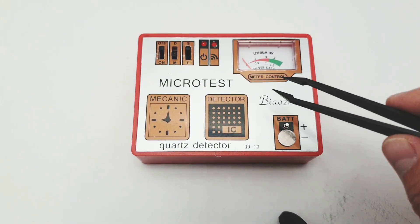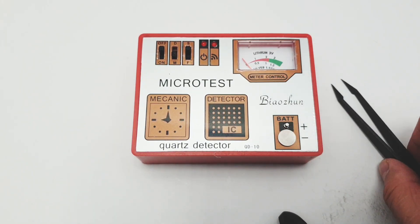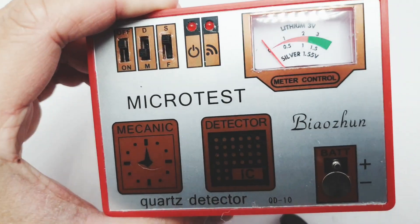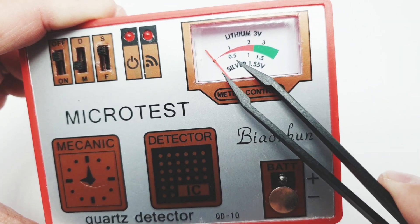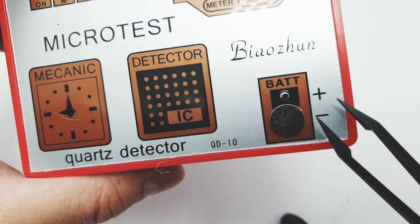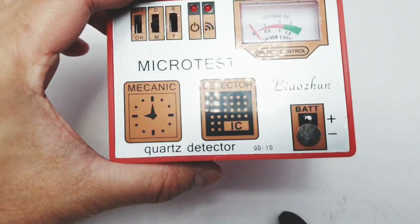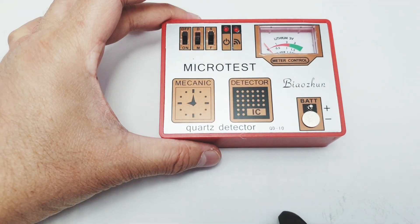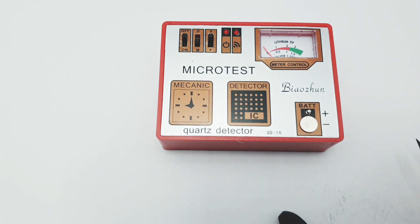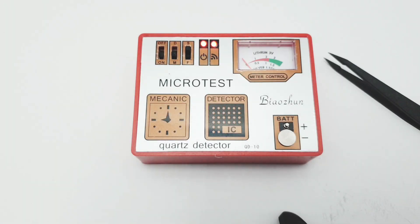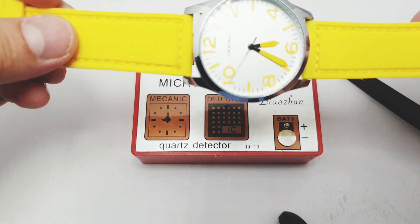Another function with Microtest that we're going to test is the battery indicator or battery tester. As you can see it has a meter on top and the mechanism for the battery is at the bottom.